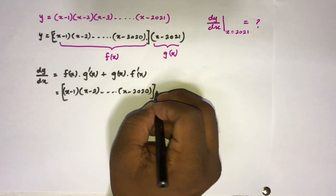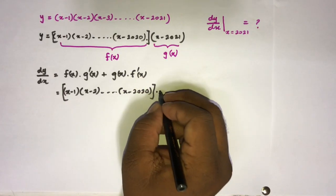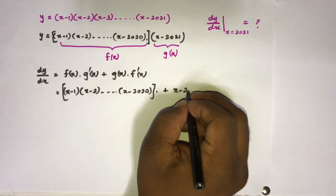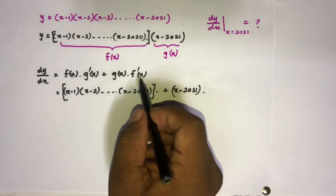We know the derivative of g(x) equals 1, so here 1, plus g(x) which is (x-2021) then f'(x).